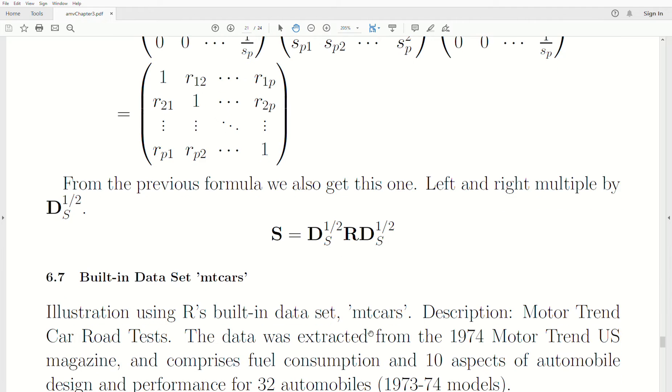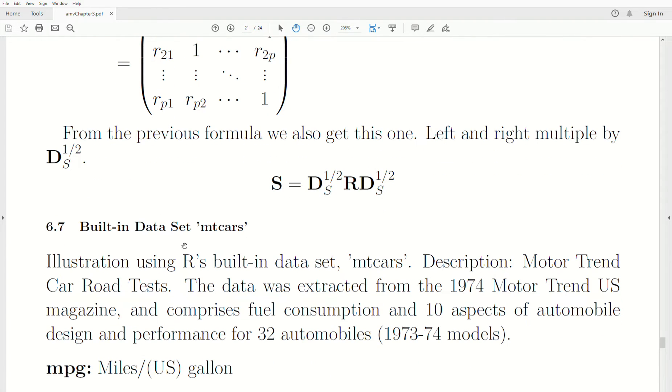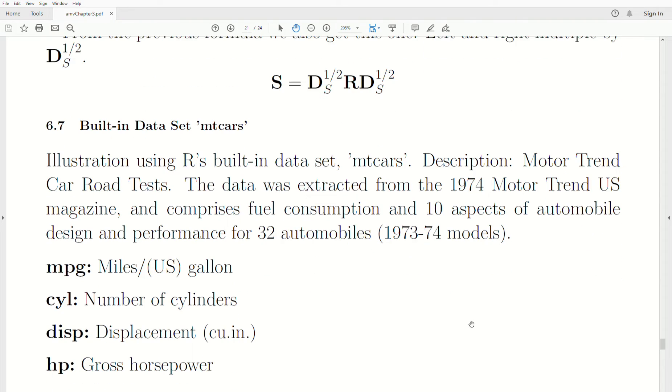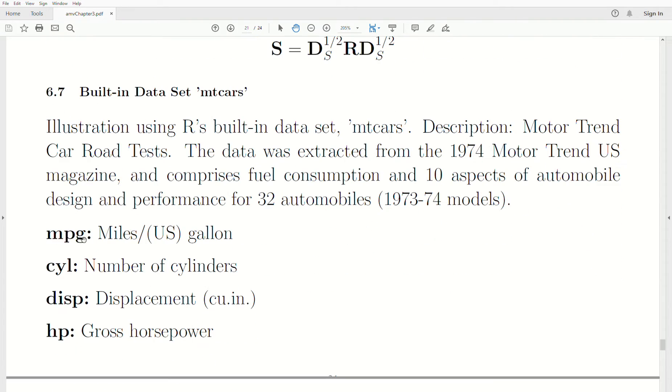Now let's illustrate this in R. There's a built-in data set called MT Cars, and its description is the Motor Trend Car Road Test. The data was extracted from the 1974 Motor Trend U.S. magazine and comprises fuel consumption and 10 aspects of automobile design and performance for 32 automobiles from the 1973 and 74 models.